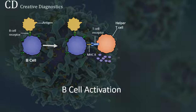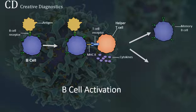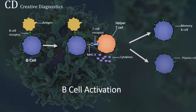A B-cell is triggered when it encounters its matching antigen. The B-cell engulfs and digests the antigen, then displays antigen fragments bound to its unique MHC molecules. This MHC attracts the help of a mature, matching T-cell. Cytokines secreted by the T-cell help the B-cell to multiply and mature into antibody-producing plasma cells.